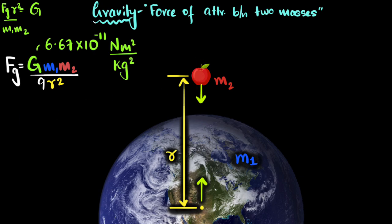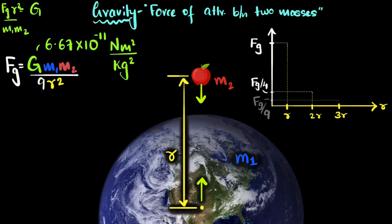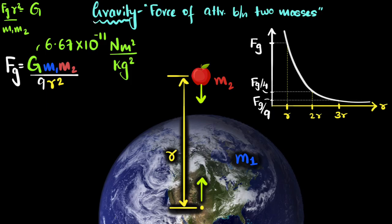We can now nicely show this by drawing a graph of force of gravity versus distance. At distance r the force is Fg. If you go twice the distance, the force will not become half — it'll become one-fourth, so it'll be somewhere lower on the graph. If you go three times, it'll become one-ninth. Notice the force of gravity decreases as you increase the distance, and if you draw the graph it looks like a curve — this is the graph of the inverse square law.